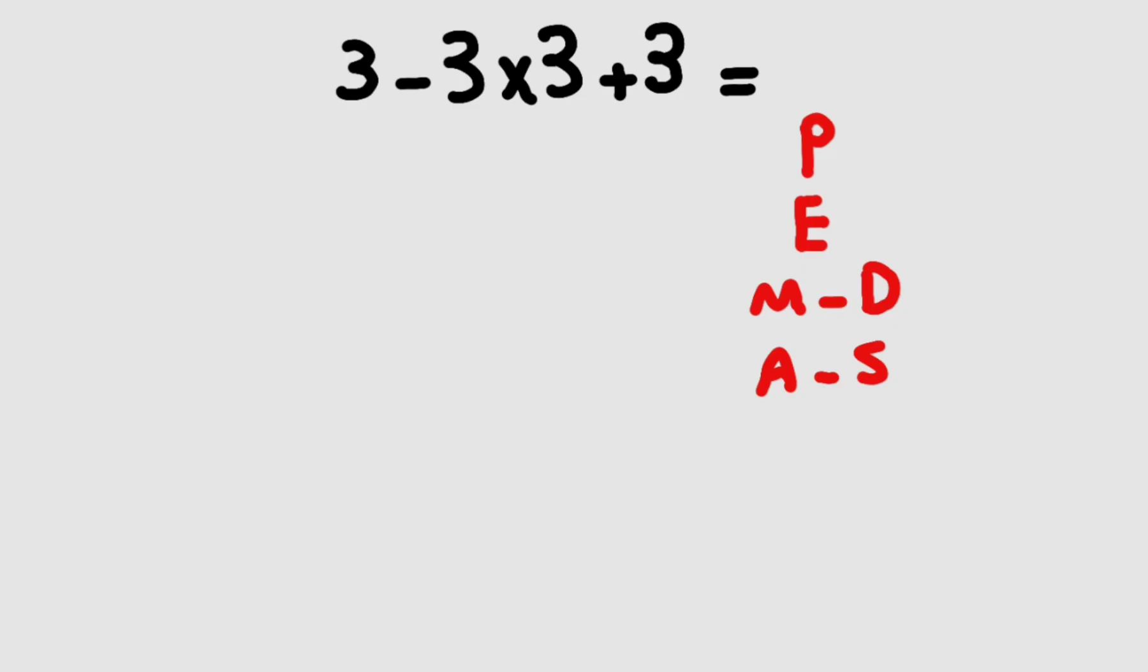According to this rule, we have one multiplication here that we have to solve first. As we know, multiplication has higher priority than addition and subtraction, so we have to solve this multiplication first. 3 times 3 gives us 9.